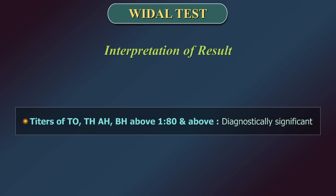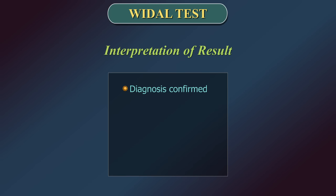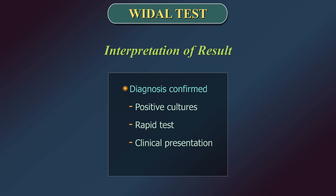Titers of TO, TH, AH, and BH of 1:80 and above are taken as diagnostically significant. However, the diagnosis should be confirmed with positive cultures, rapid tests, clinical presentation, and other laboratory tests.